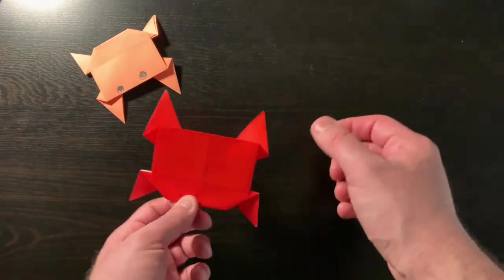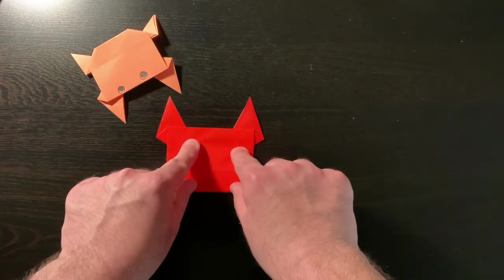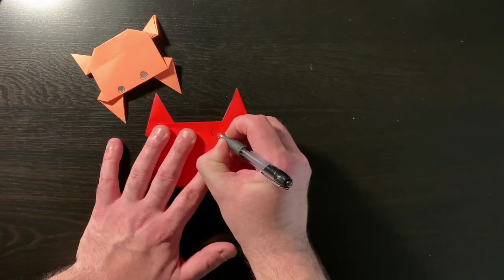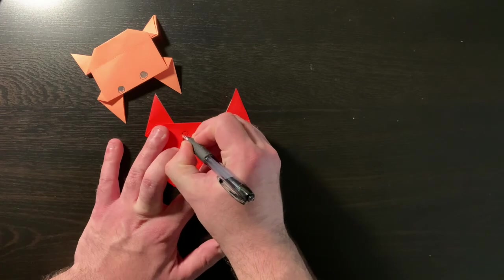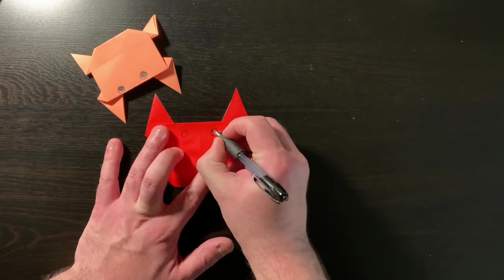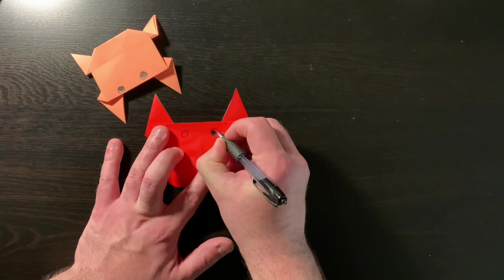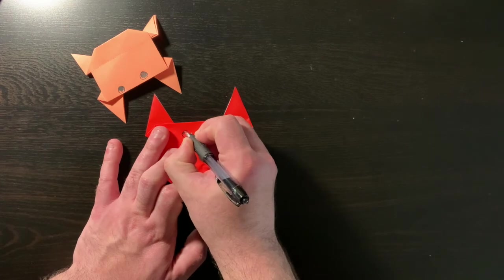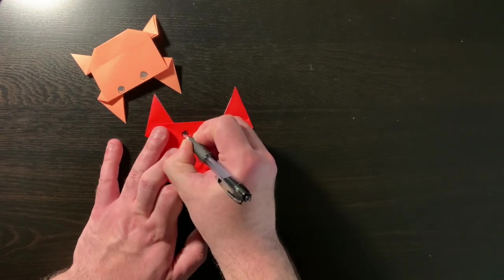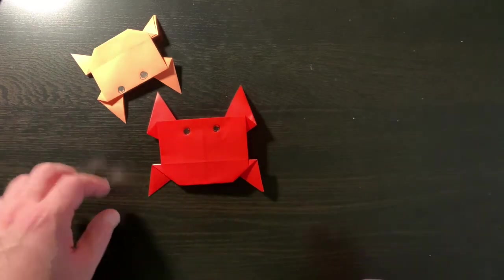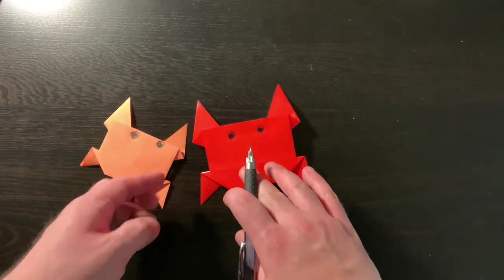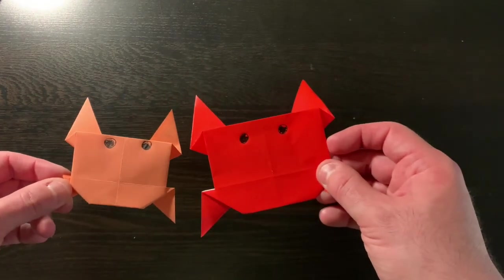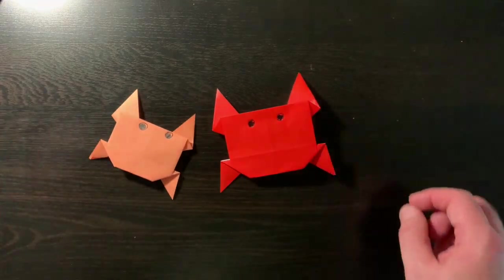Our crab will be finished when we turn it over. And there we go. All we have left to do is let's make a little face. Let's put on a couple of eyes for our crab. There we go, and now we have two crabs. Aren't they cute? Thank you for joining me and have a great day. Make a couple of crabs and have a day at the beach.